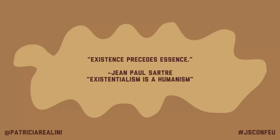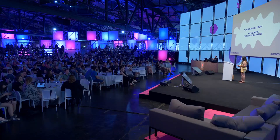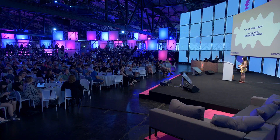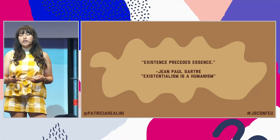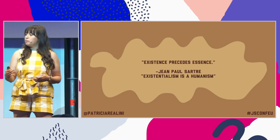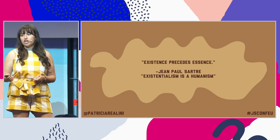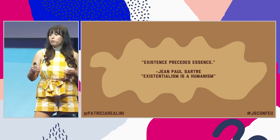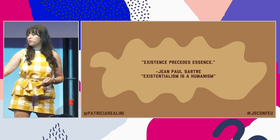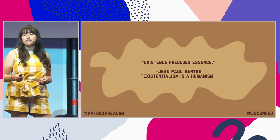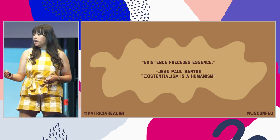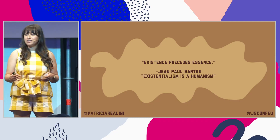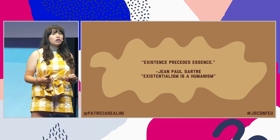Sartre's theory of existentialism dictates that humans create their own values and determine their own meaning for their life. To Sartre, once an oppressive situation is regarded as such by those who feel oppressed, the situation becomes intolerable. We are then compelled to project our intentions onto our present condition and transform them into action. And because ethical dilemmas disproportionately affect underrepresented minorities, it's important to take the time to listen to us instead of just assuming what we need.